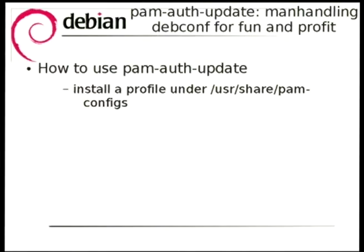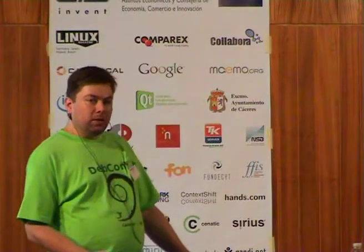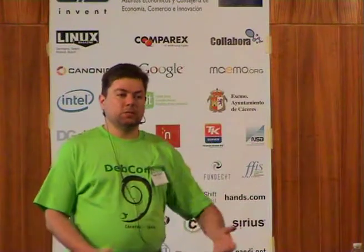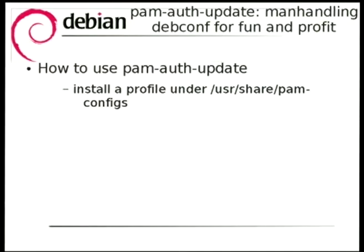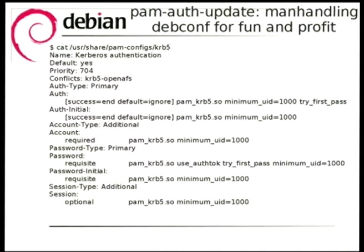So the first thing I want to talk about is how you actually use PAM-auth-update from the perspective of a packager. Basically it's three simple steps. You install a profile under this directory — ship this in your package. Here's an example for the Kerberos 5 package, actually taken from the libpam-krb5 package in Debian. It shows you the syntax — a very simple declarative format, so there's no Turing-complete zaniness involved. You don't have to deal with the crazy things that maintainers come up with using scripting languages if left to their own devices.